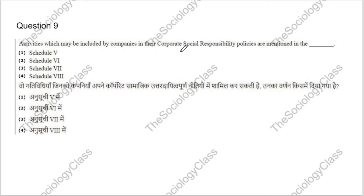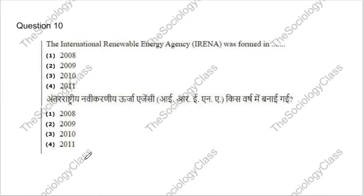Question 9: Activities which may be included by companies in their Corporate Social Responsibility policies are mentioned in which Schedule? Options: 5th, 6th, 7th, or 8th. The correct answer is Schedule 7 — please remember this.